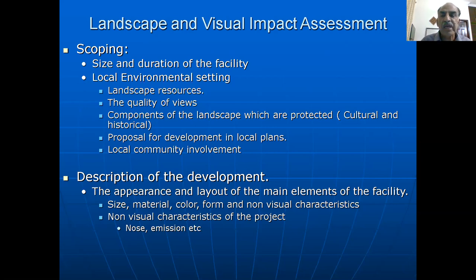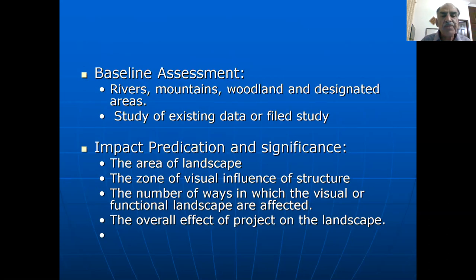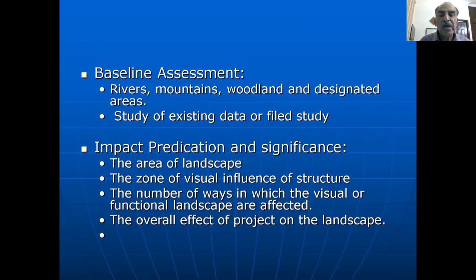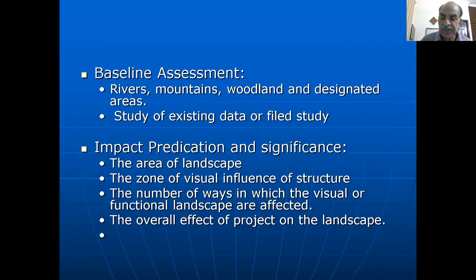The baseline assessment is very important before we predict visual impacts. For example, we note if there are rivers, mountains, woodlands, designated areas, or national parks, and then we review existing data or field studies. We then try to see the impact on the landscape — the zone of visual influence. For example, if a high-rise tower is being constructed in the neighborhood, what will be the visual influence of this building? We assess the number of ways in which the visual or functional landscape is affected and the overall effect of the project on the landscape in terms of cutting, filling, and removal.